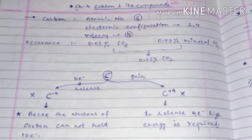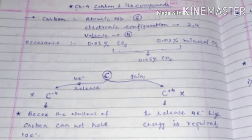So the question is: why can carbon not form a cation? Because carbon needs to release four electrons to become a cation. To release four electrons, very high energy is required, and so carbon cannot convert into a cation.